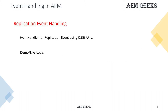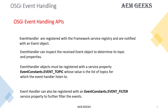In this tutorial, I'll talk about how you can write an event handler for replication events using the OSGI API and show you a demo. I have already explained the OSGI API for event handling, but let me reiterate a bit. Event handlers are registered with the framework and notified with an event object, which will contain all the information required for your operation.